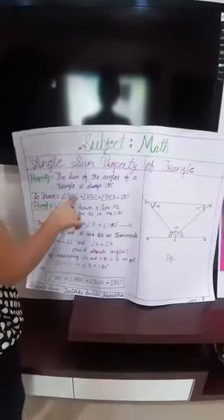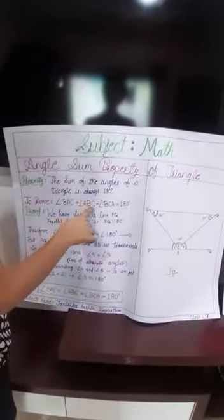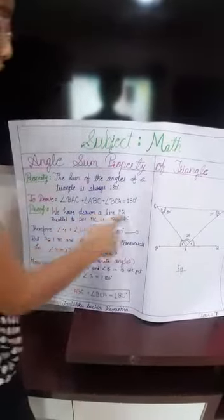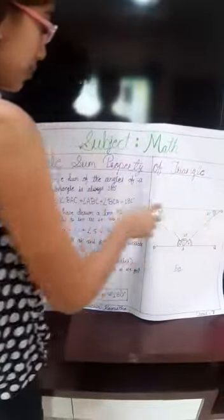To prove that angle BAC plus angle ABC plus angle BCA equal to 180. Next proof is we have drawn a line parallel to BQ parallel to BC.